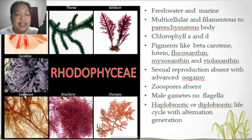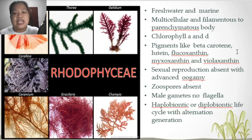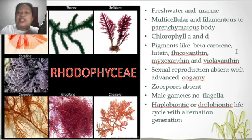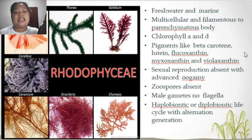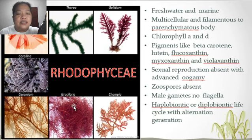Next group, we have the Rhodophyceae, also known as the red algae. Red algae are usually found in freshwater or marine environments, multicellular, with filamentous to parenchymatous bodies. They contain chlorophyll A and D, and their pigments are reddish or violet because they contain beta-carotene, lutein, fucoxanthin, myxoxanthin, and violaxanthin. Sexual reproduction is present with advanced oogamy; zoospores are absent, with non-flagellated gametes. They have haplobiontic and diplobiontic life cycles with alternation of generations. Examples include Porphyra, Polysiphonia, Gelidium, Corallina, Ceramium, Gracilaria, and Champia.